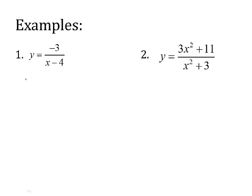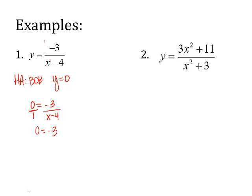We're concerned about the horizontal asymptote right now, so let's start there. Using Bobby O'Bottin O'HTC: there is no X on top but there is an X on the bottom, so it's big on bottom — that's Bobby O — meaning the horizontal asymptote is y = 0. So I set 0 equal to the function and cross multiply. I put the zero over one, cross multiply, and get 0 = −3. That's not equal, so the function does not cross.